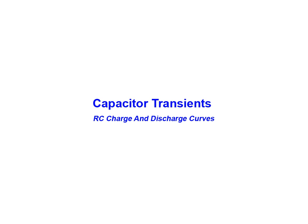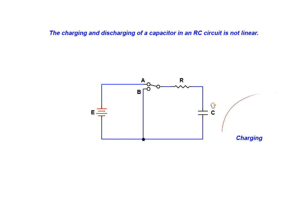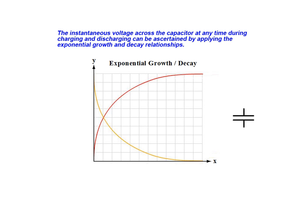In this animation we will examine capacitor transients, specifically the RC charge and discharge curves. The charging and discharging of a capacitor in an RC circuit is not linear. The instantaneous voltage across the plates of the capacitor at any given time during charging or discharging can be ascertained by applying exponential growth and exponential decay relationships.